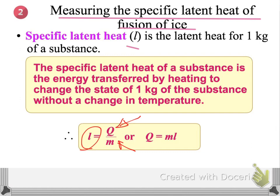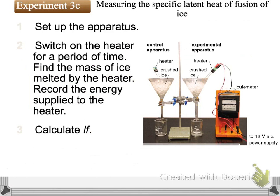To do so, we have to use a setup to measure how much energy is transferred to change ice into water without any change of temperature. You can see the setup here — we have the joule meter. The joule meter helps us find out how much energy is transferred to the heater, and we assume the energy from the heater is totally transferred to melt the ice into water.